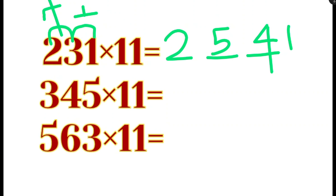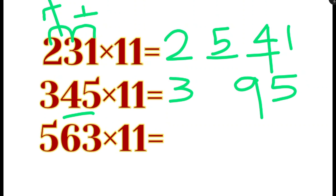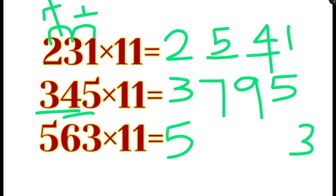If we get the answer, 345 is equal to 11. 345 is equal to 11. 375 is equal to 375. Correct. The answer is 5 and 3. 6 plus 3 is equal to 9.